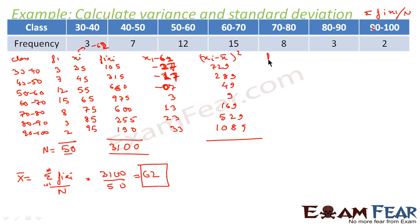Now, let's find the value of fi times xi minus mean squared, because the formula for variance is 1 by n into sigma fi times xi minus mean squared. We will multiply these values.